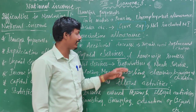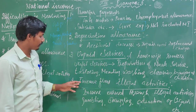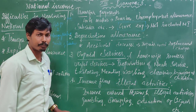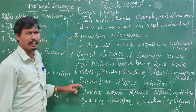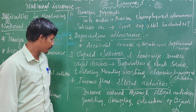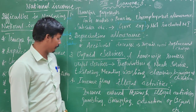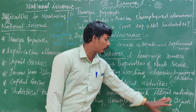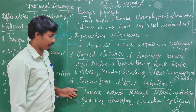Income from illegal activities is not included in national income. Income earned through illegal activities such as smuggling and sale of illicit liquor, etc., cannot be properly counted.